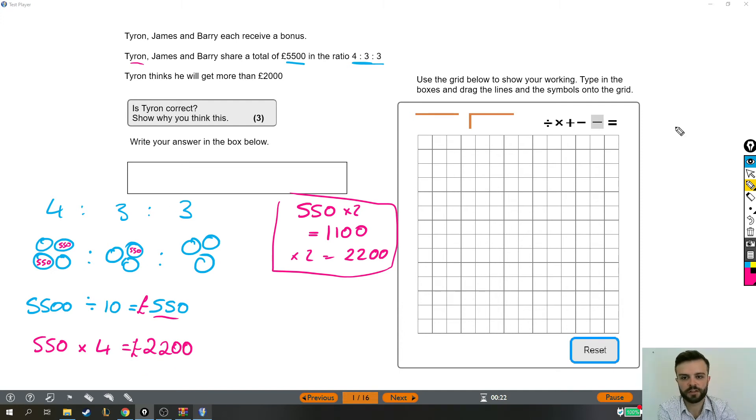Now the question says, Tyron thinks he will get more than £2,000. Is Tyron correct? And the answer is yes. He gets £2,200. You don't necessarily need to include that little bit of extra information because we are going to have it on our working out grid. But the answer is yes, he's correct because he does get more than £2,000.